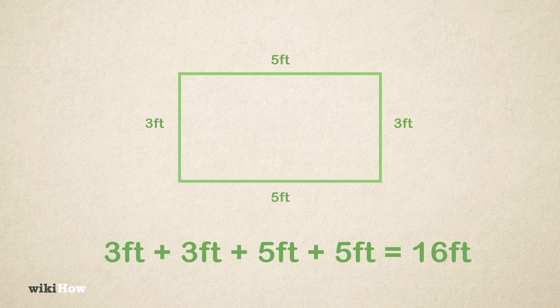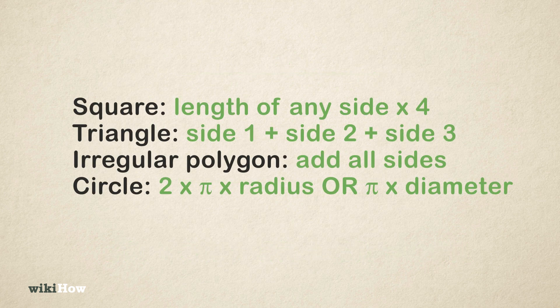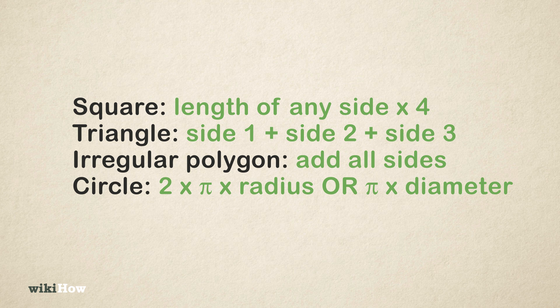Here are the formulas for other common shapes. Square: Length of any side times 4. Triangle: Side 1 plus side 2 plus side 3. Irregular polygon: Add all sides. Circle: 2 times pi times radius or pi times diameter.